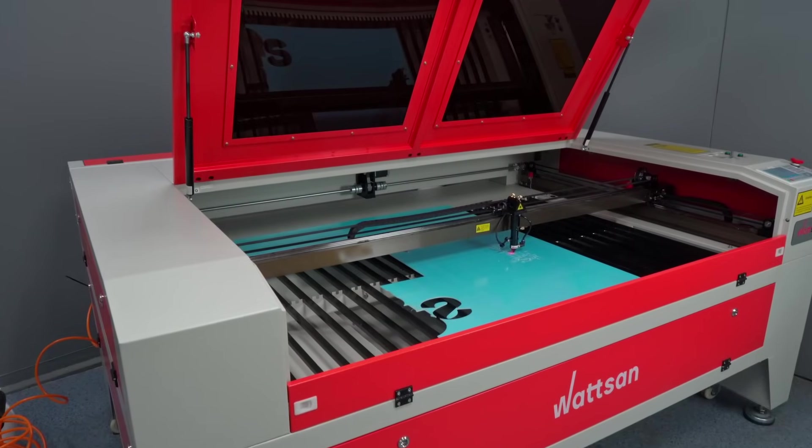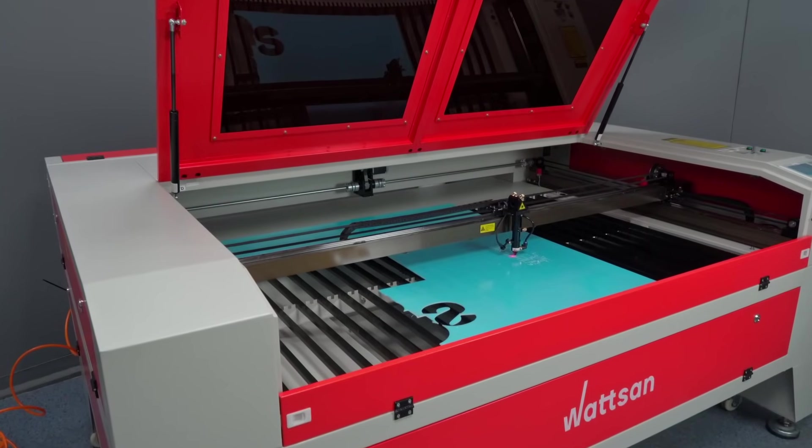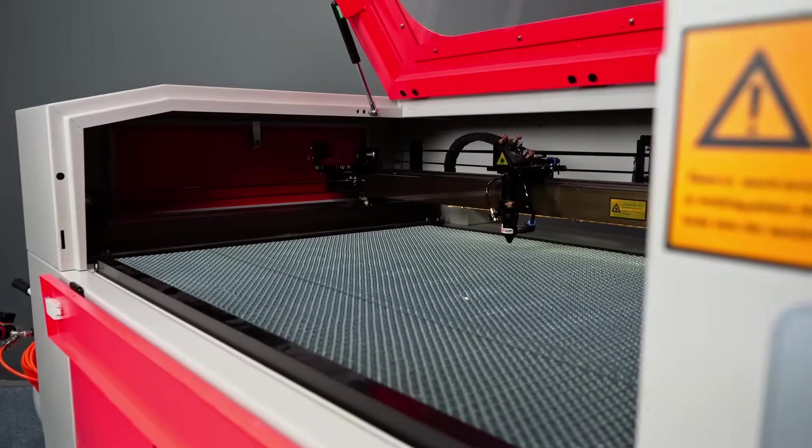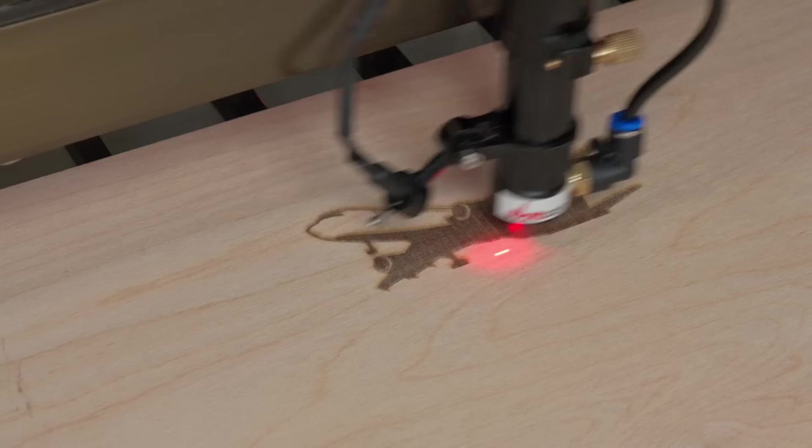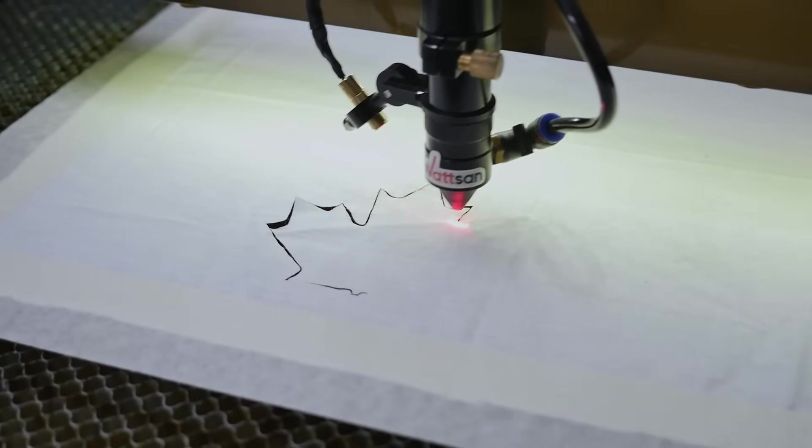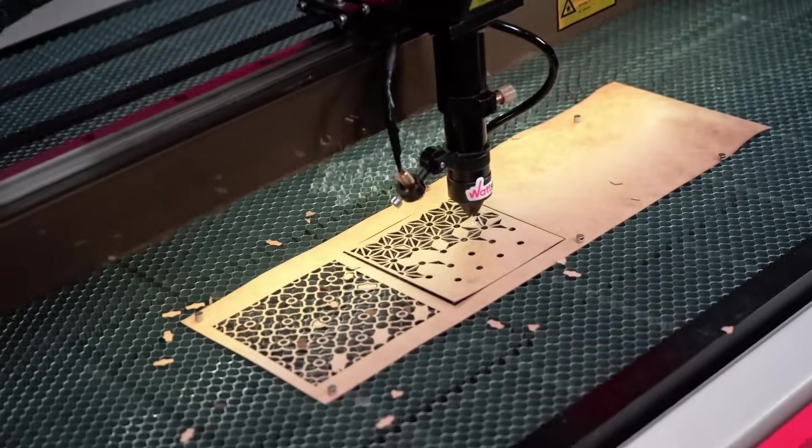While the machine does its job, we'll tell you a few facts about the 1610 LT. It can work with many materials, plywood, plexiglass, fabric, plastic, leather, cardboard, paper and rubber.